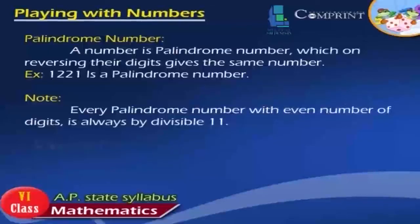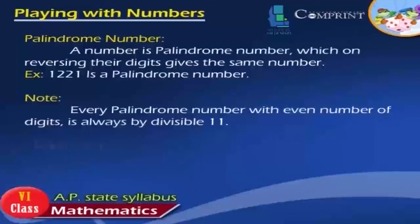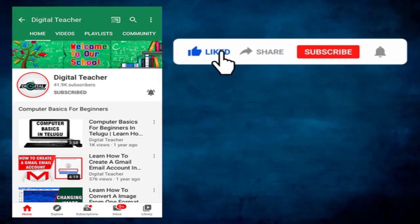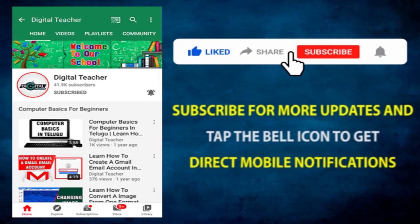Palindrome Number: A number is a palindrome if reversing its digits gives the same number. Example: 1221 is a palindrome number. Note: Every palindrome number with an even number of digits is always divisible by 11. Thank you for watching.